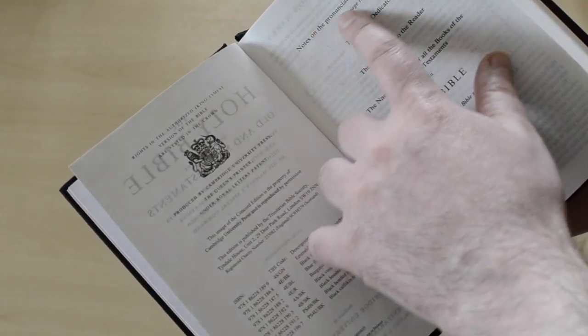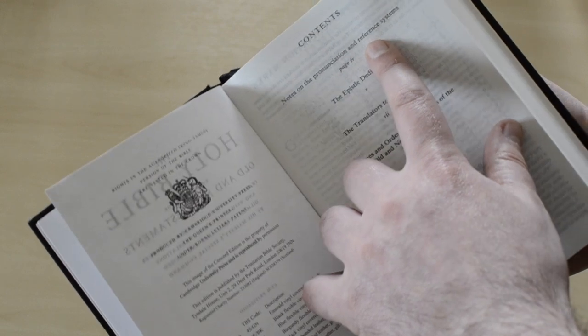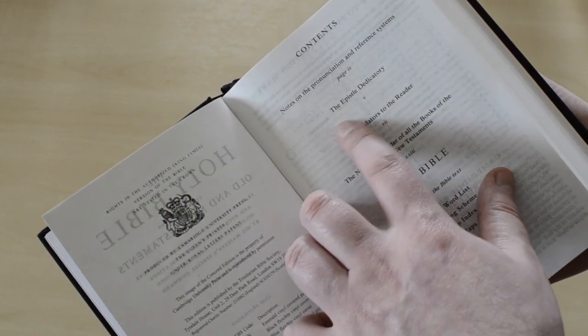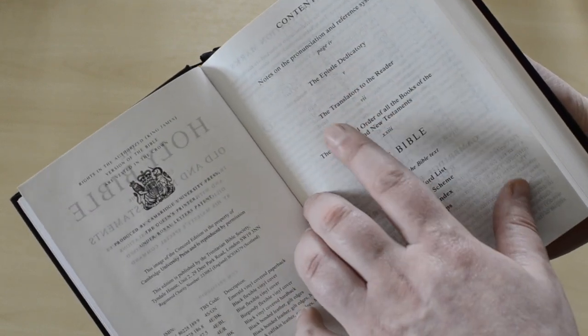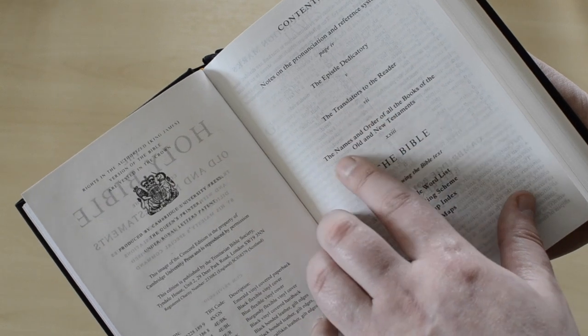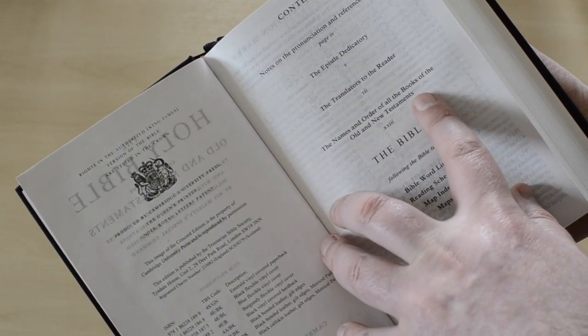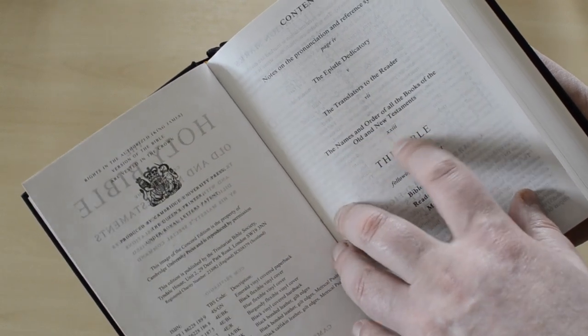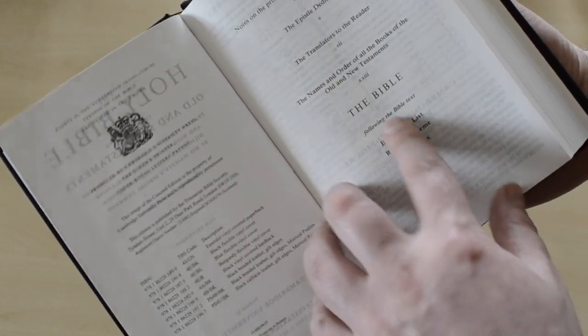Here we've got the notes on pronunciation, reference system, and page number four, the Epistle Dedicatory, the translators to the reader, the names and order of all the books of the Old and New Testaments, and basically the Bible itself.